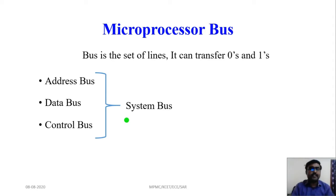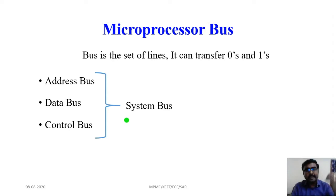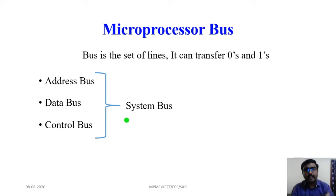Buses can be classified into three types: the address bus, the data bus, and the control bus. The address bus sends the address of the memory location to the memory element. The data bus carries information to the memory or takes information from the memory.